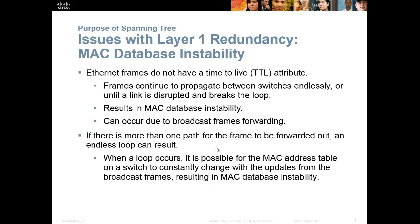Ethernet frames at layer two don't have a TTL attribute. TTL is a layer three attribute — as packets hit the router, the router decrements the TTL by one, and once it reaches zero, the router drops the packet. Without TTL, frames continuously go through the loop, resulting in all kinds of MAC database instability and other issues. It's going to require user interaction — you may have to turn a switch off or unplug a link.